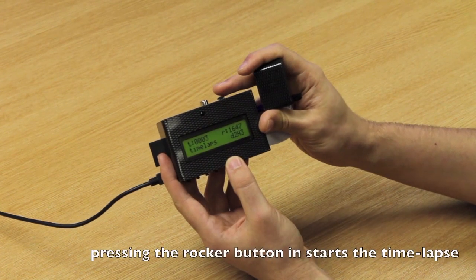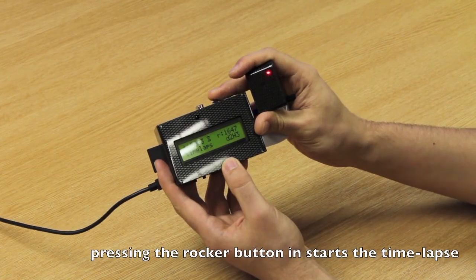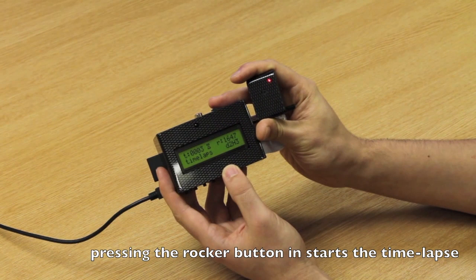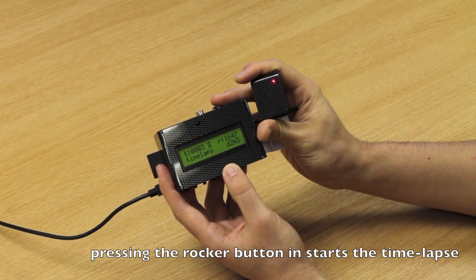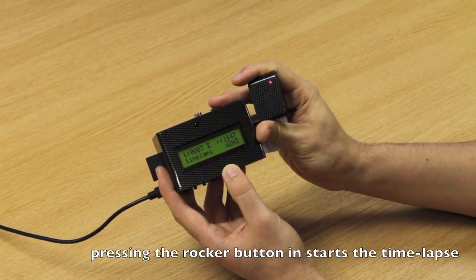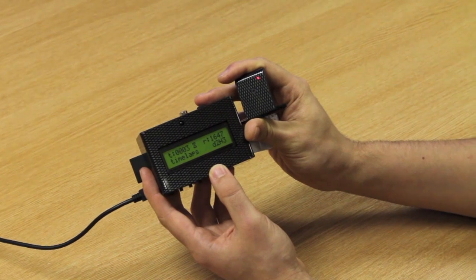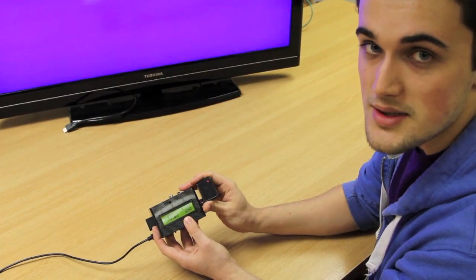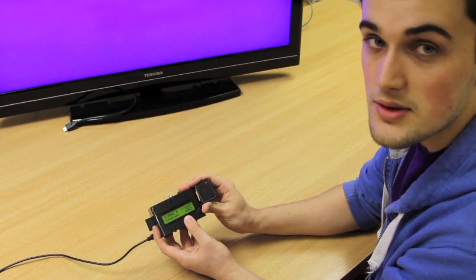Then to take the timelapse, we just press the rocker button in and it's taking the timelapse, so it'll take a picture every three hours over the course of two days. That's showing you how easy it is to set up a timelapse with snap camera, just in a few simple steps.